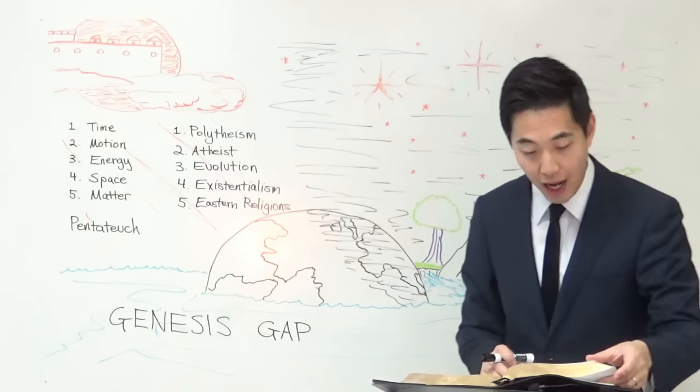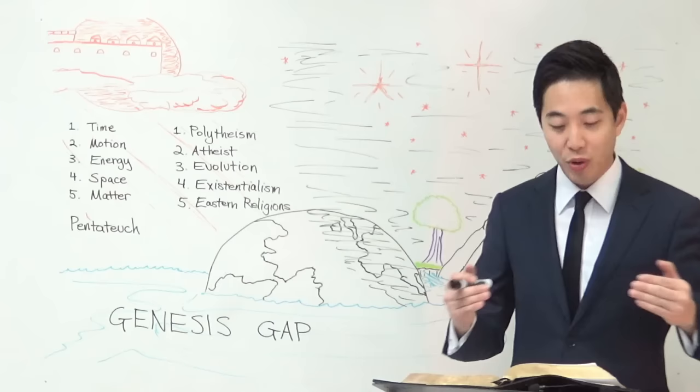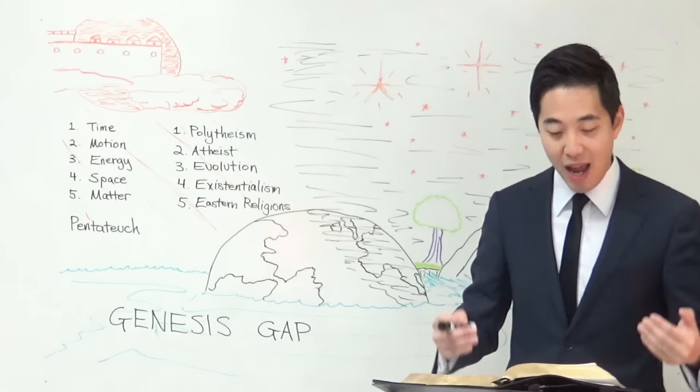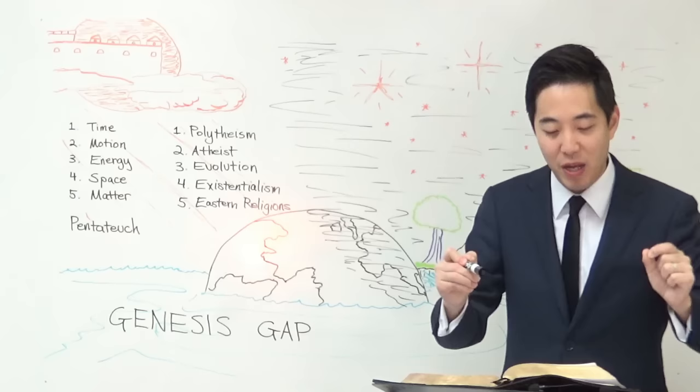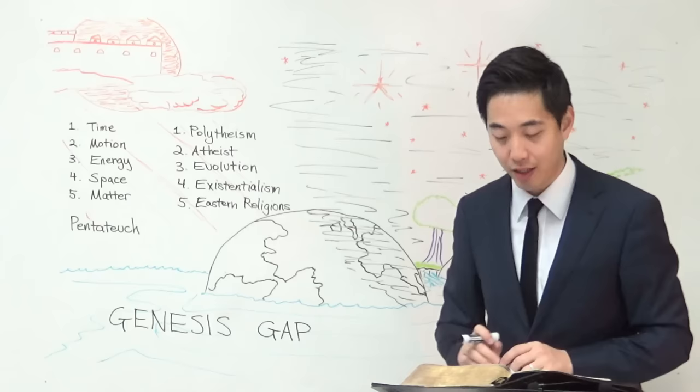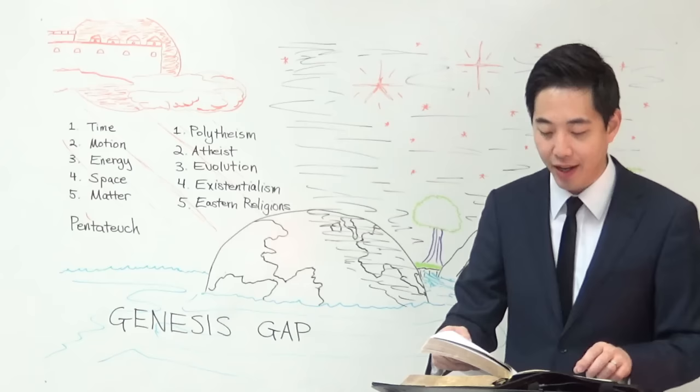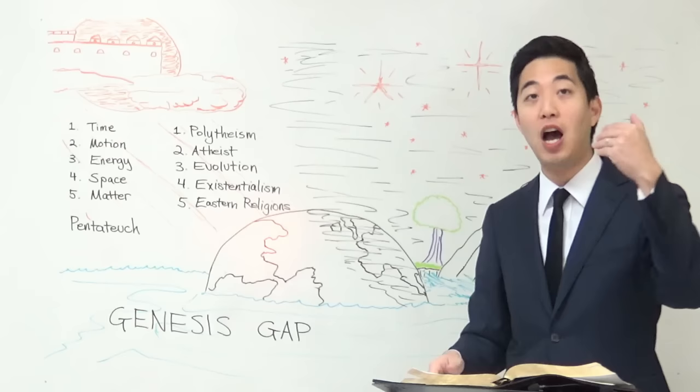Look at Isaiah 45:18: "For thus saith the Lord that created the heavens; God himself that formed the earth and made it; he hath established it, he created it not in vain, he formed it to be inhabited." If he created the earth not in vain and formed it to be inhabited, then notice this supports the Genesis Gap — if you don't believe in it, you're going to contradict scripture.